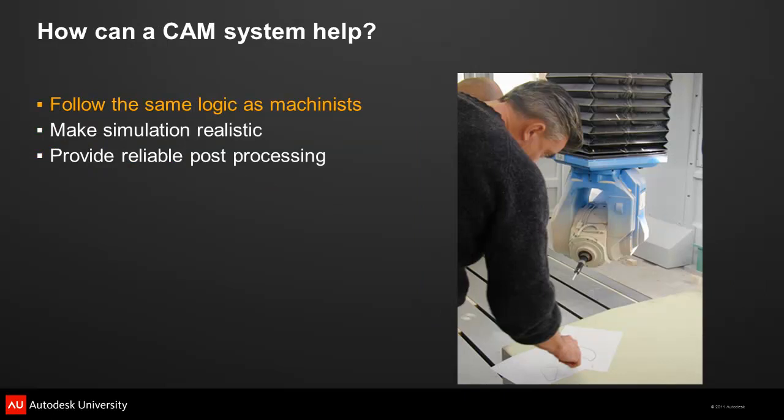A CAM system can make the programming process easier by examining how the best machinists go about their work and embedding that logic into the software. Using the same logic as machinists lets the system provide guidance for new programmers and a familiar environment for experienced programmers. But guidance must never be used to impose limitations — 5-axis programming can be compared to the artistic process of sculpting, which means that programmers must have creative freedom when deciding how to cut a part.